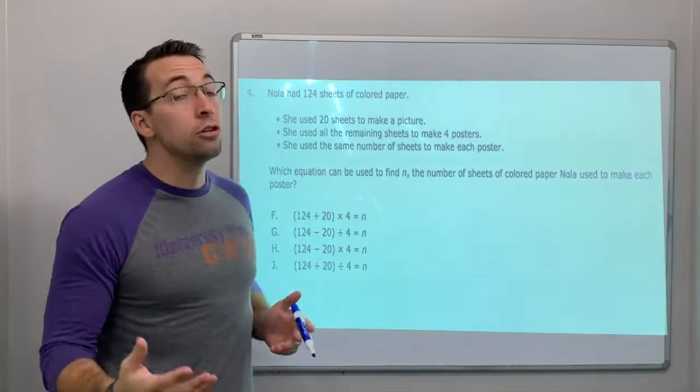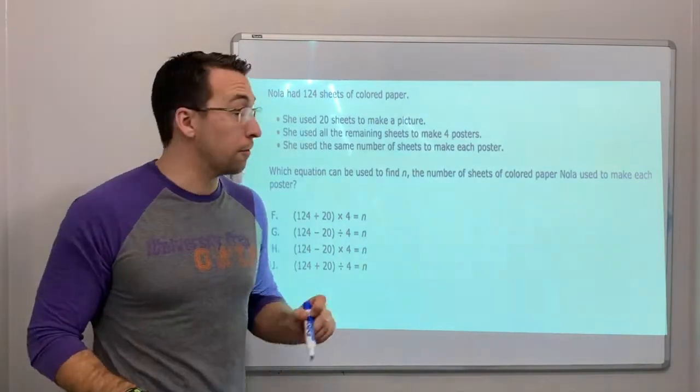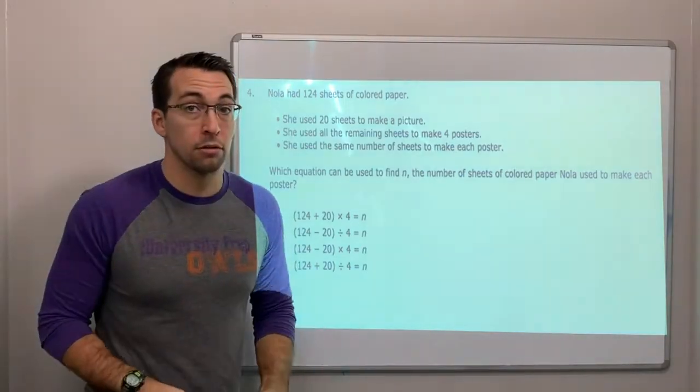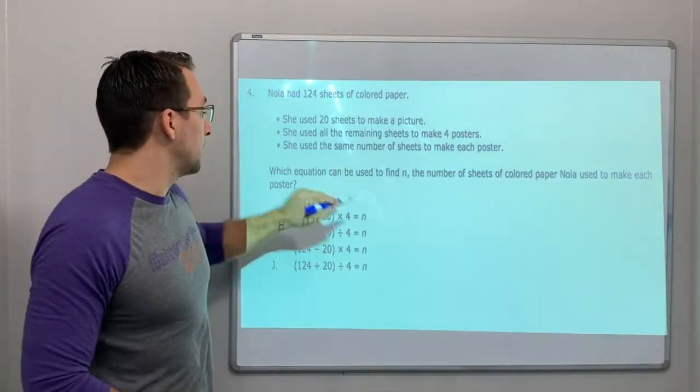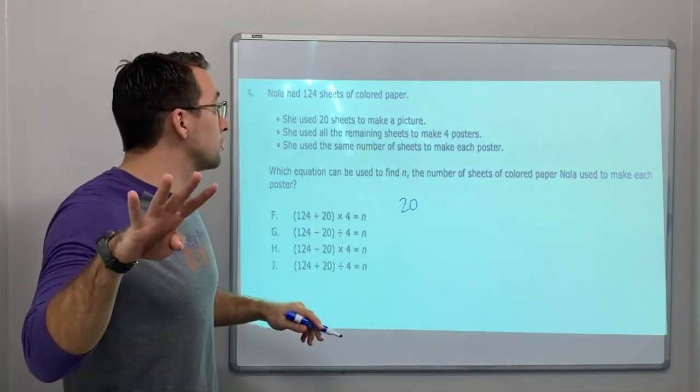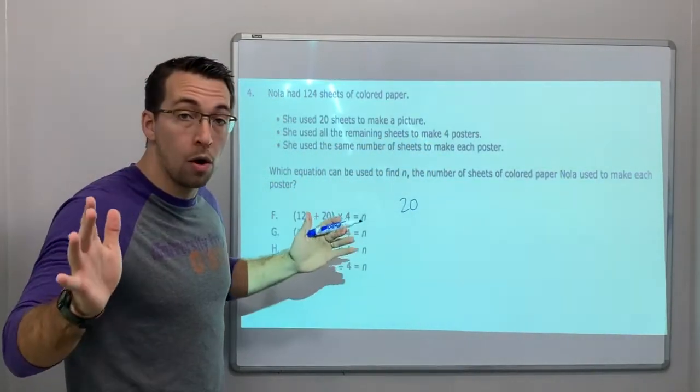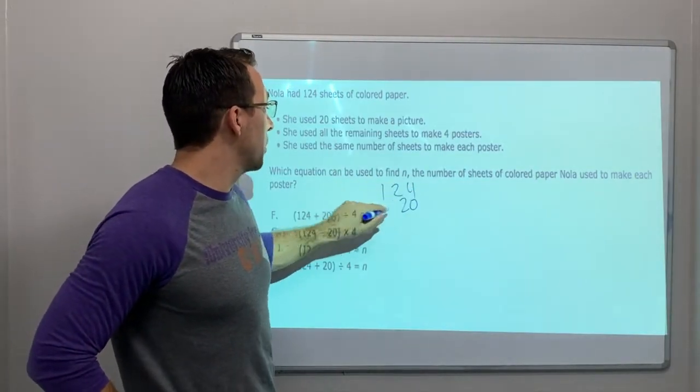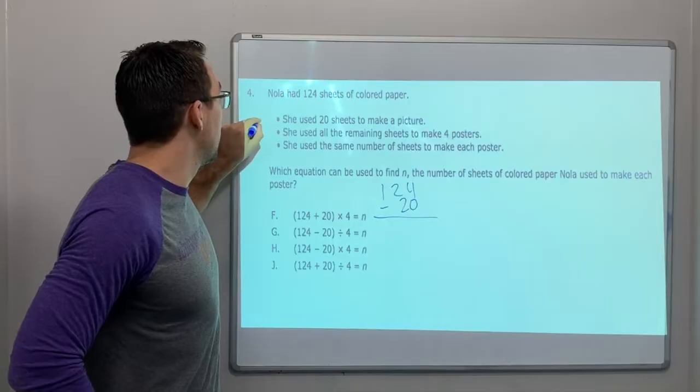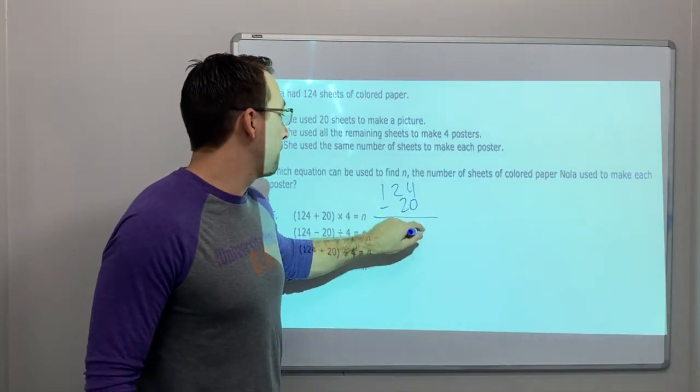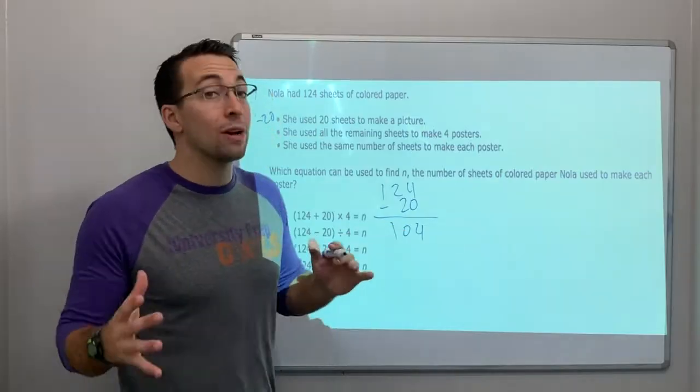Nola had 124 sheets of colored paper. She used 20 sheets to make a picture. She used all the remaining sheets to make 4 posters. Slow down. So 124 minus 20. She used minus 20. So that leaves us with 104 left.